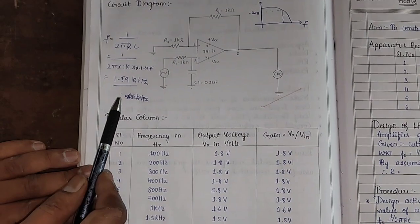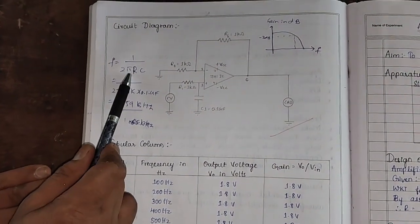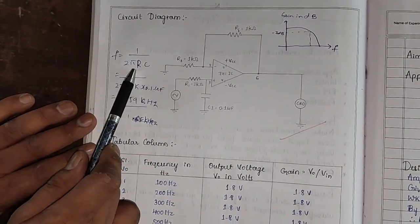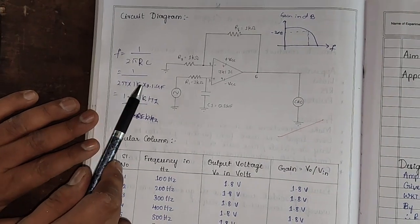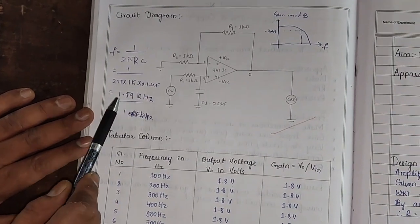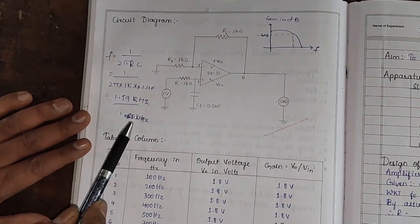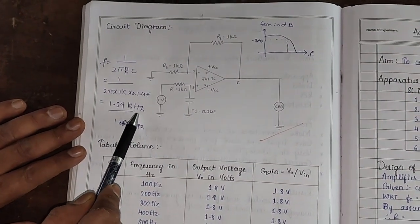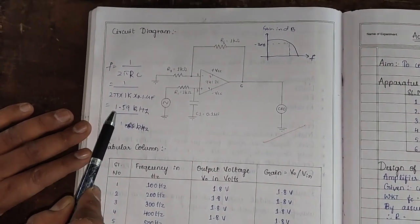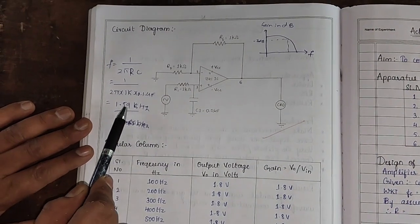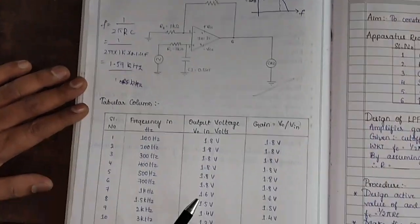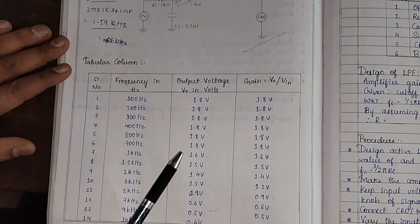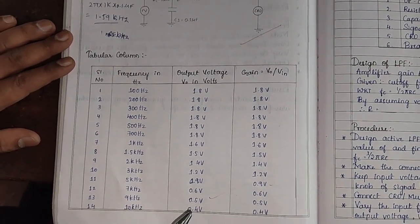We can design the cutoff frequency using this formula. The formula is given as F equals 1 divided by 2 pi RC. Once we substitute this value, F is 1.59 kilohertz — not 1.65 kilohertz, but 1.59 kilohertz. That means till 1.59 kilohertz we will get the output voltage, and after 1.59 kilohertz the output voltage goes on reducing.